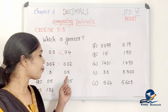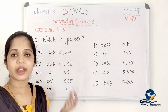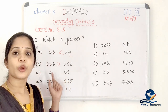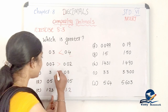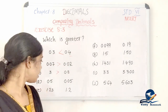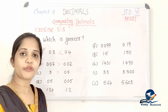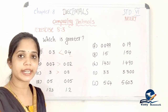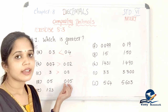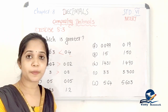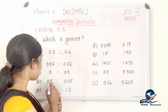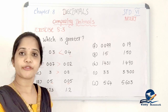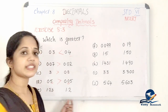Next, we have 0.82. Here the left side is 0 and the other is 3 — we compare 0 to 3, so that number is greater. Next is 0.5 compared to another number. We compare the tenths place: 5 is greater than 0, so 0.5 is greater.